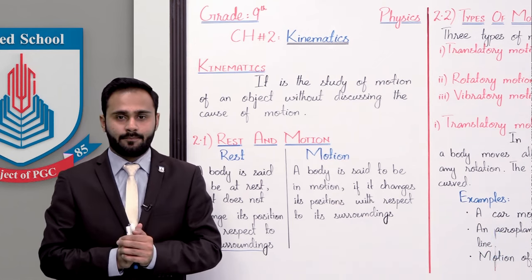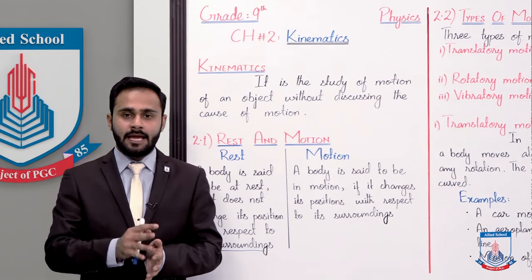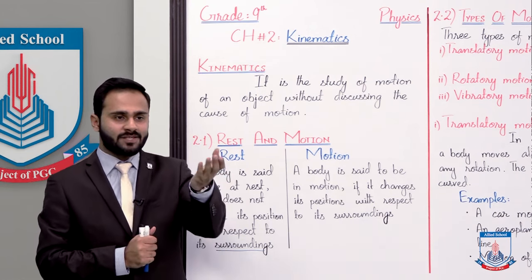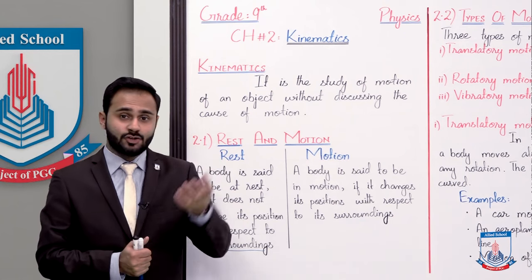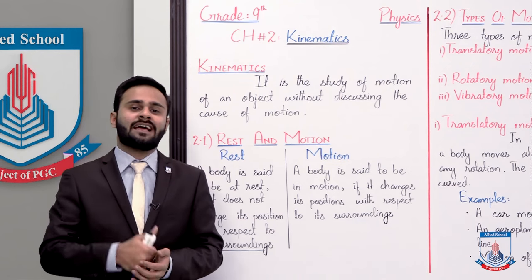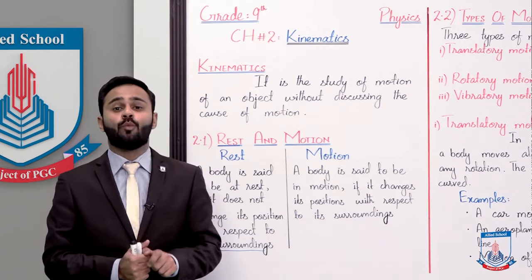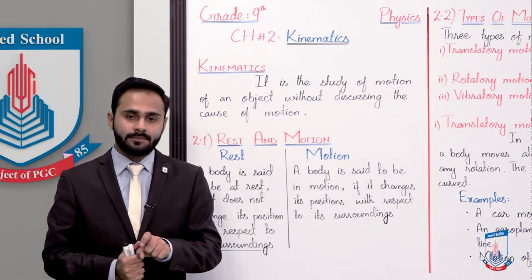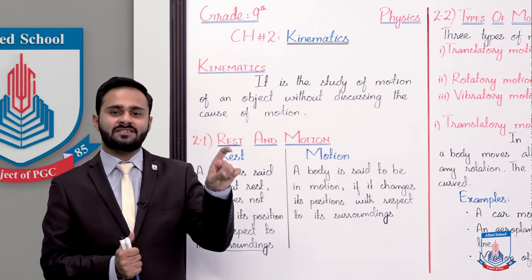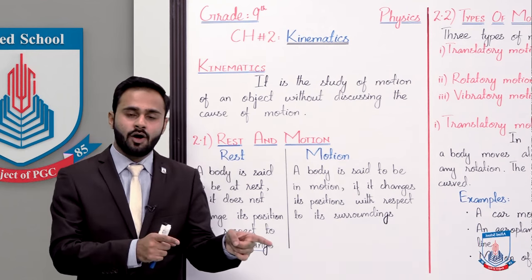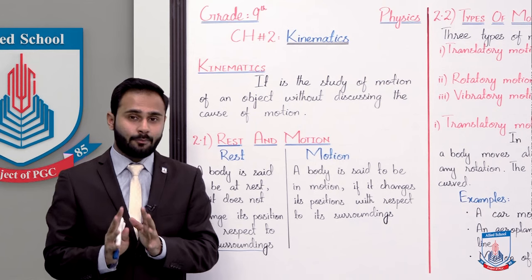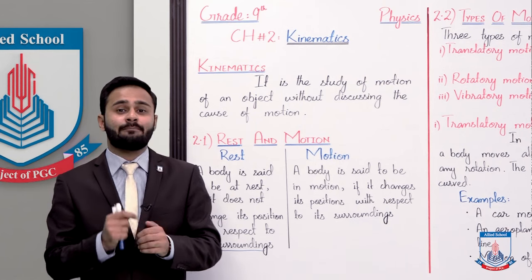Similarly, ek bahar khade person observe kar raha hai ki jo passenger B hai woh to move kar rahi hai, kyunki bus move kar rahi hai. Toh us ke according passenger B bhi move kar rahi hai — B motion mein hai. So yahaan pe kya hua? Sirf surroundings change karne ki wajah se wahi passenger B rest mein bhi tha aur wahi passenger B motion mein bhi ho gaya. I hope yahaan pe aap ko yeh clear ho gaya ki surroundings kitni matter karti hain.